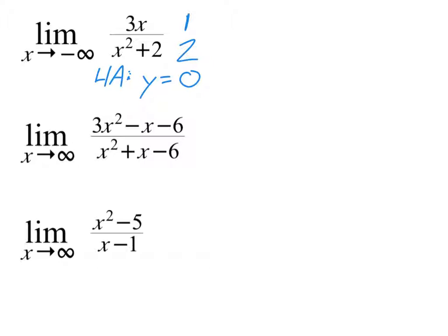So if the asymptote is at y equals zero, what is our limit as x approaches negative infinity? Zero — it's got to be the same thing. So that limit equals zero. Knowing where the asymptote is allows us to figure out what the limit is as we approach negative infinity or infinity.